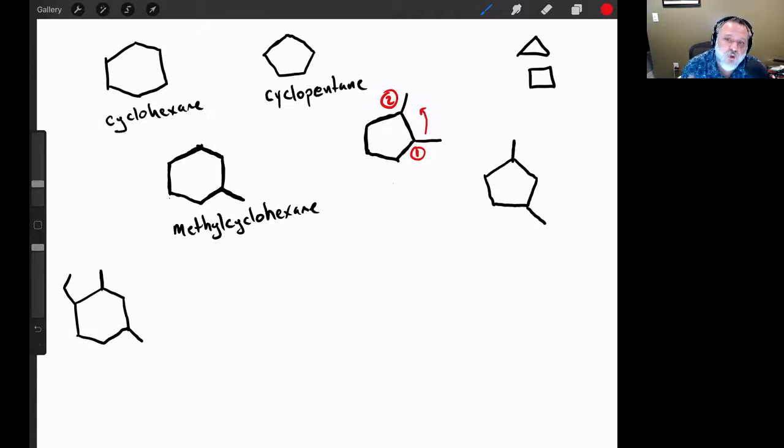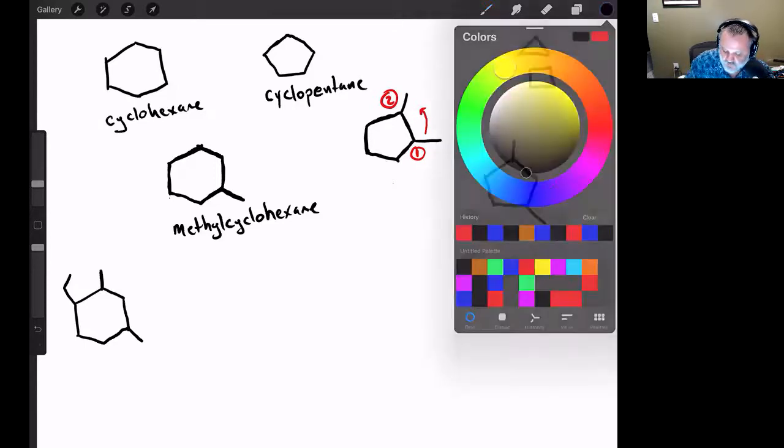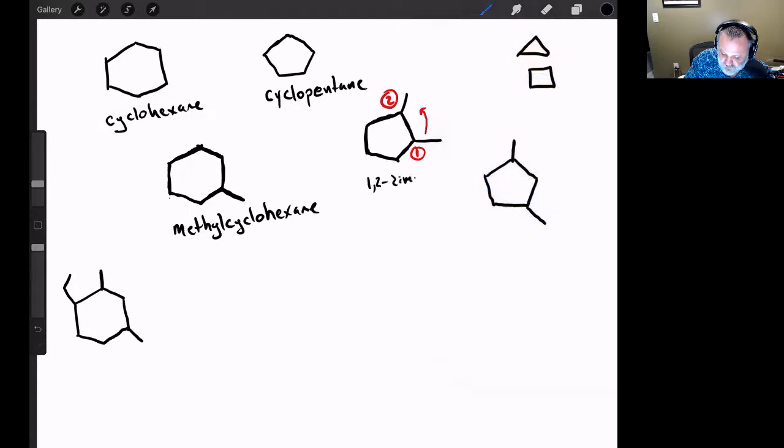So instead of one-five-dimethylcyclohexane, this one is one-two-dimethyl cyclo—and I'm sorry, it's not cyclohexane, it's cyclopentane. So one-two-dimethylcyclopentane.